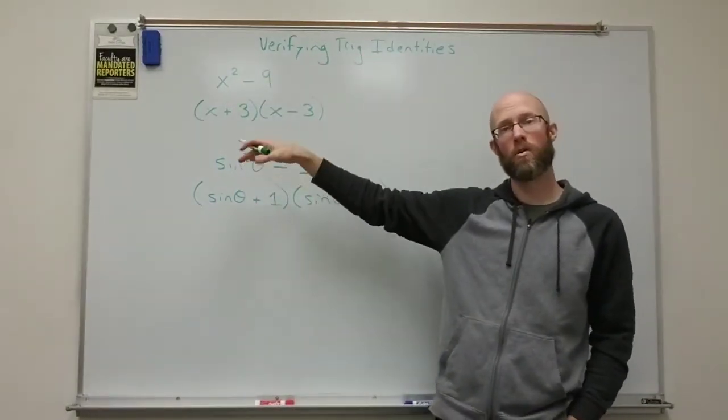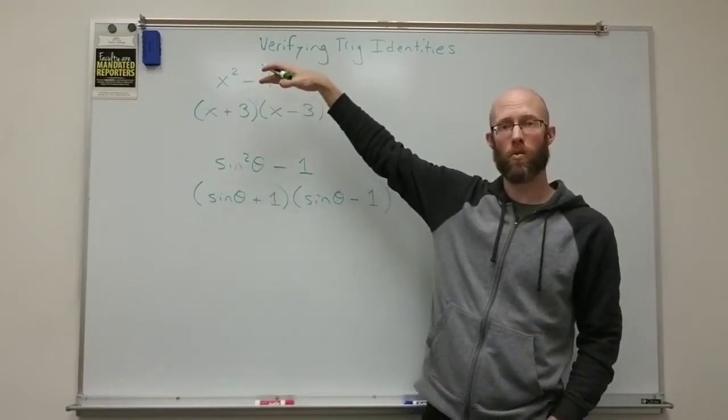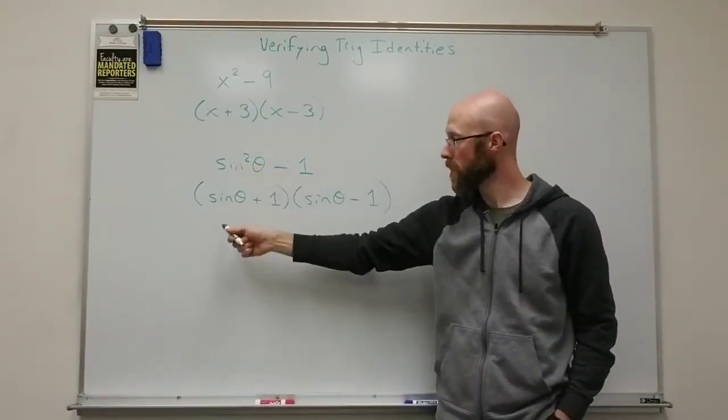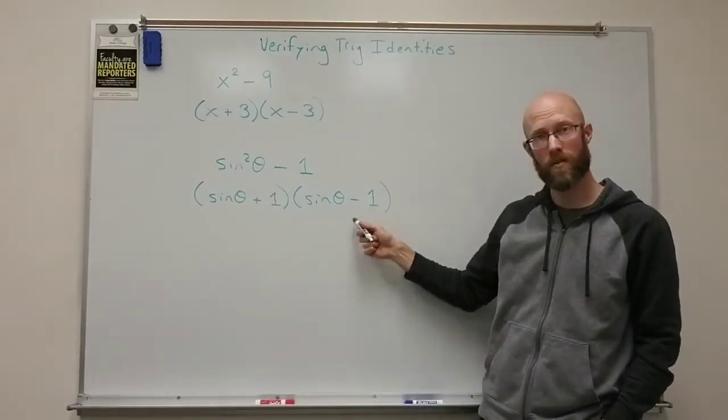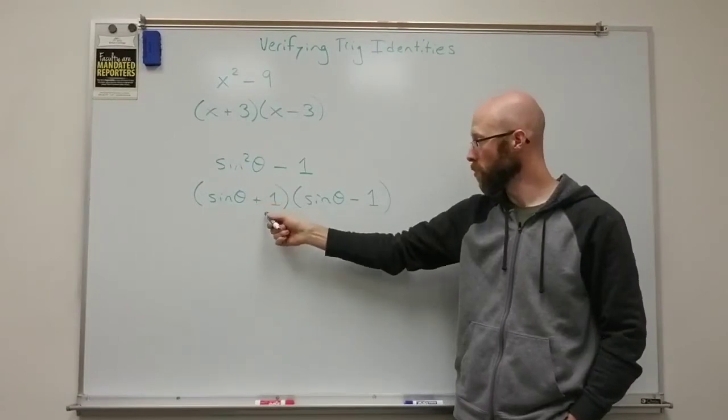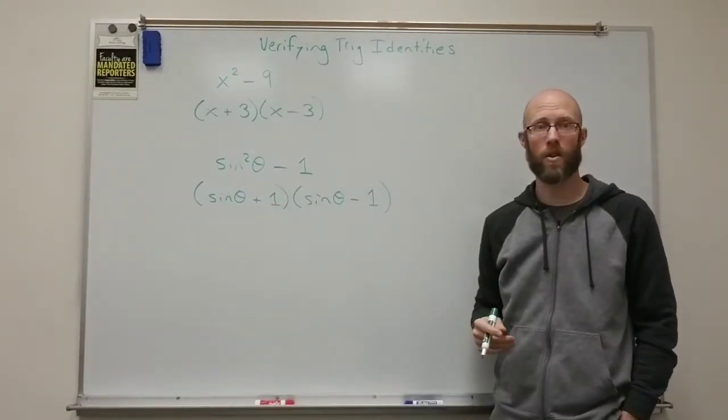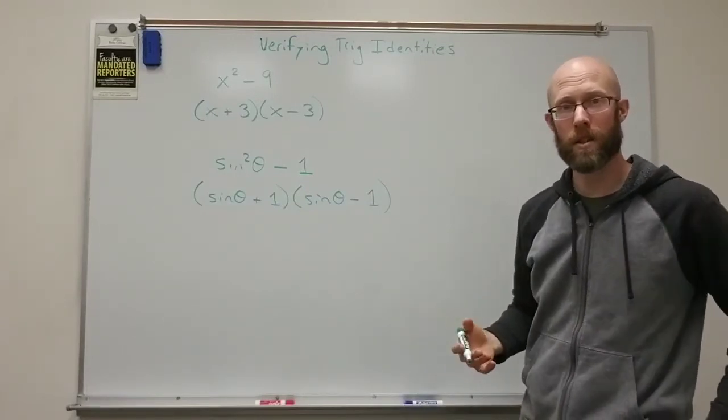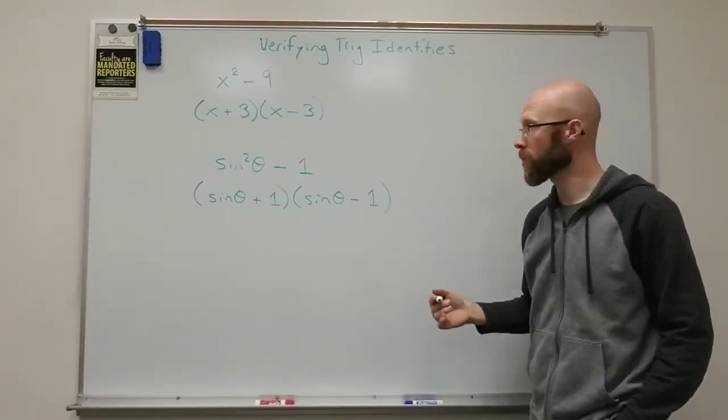And then the three times negative three gives you the negative nine. So it should, when you redistribute or remultiply, give you the original here.